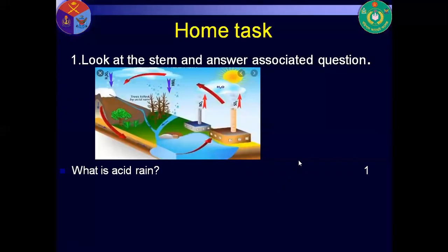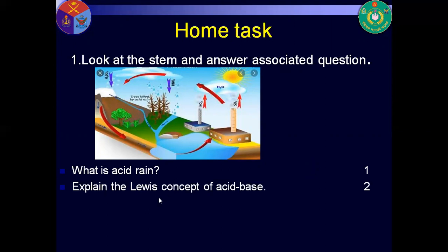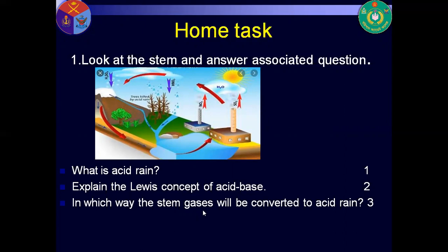Dear cadets, here is a context question for you. What is acid rain? The rain which contains acid and has pH less than 5.6. Lewis concept of acid-base: according to Lewis concept, acid is any substance which can accept one lone pair of electrons; base is any substance which can donate one lone pair of electrons. The steam gases — sulfur dioxide and nitrogen dioxide — react with water and oxygen to form acid rain, meaning nitric acid and sulfuric acid.